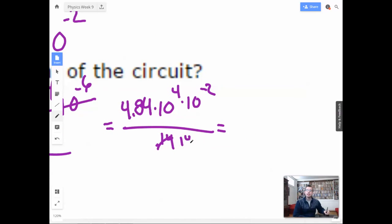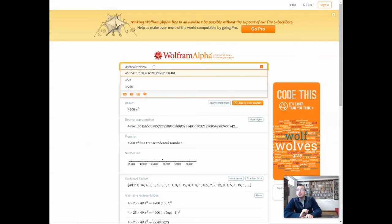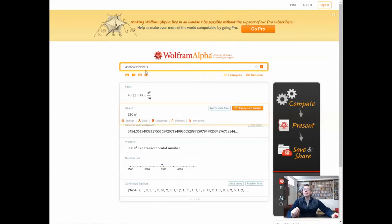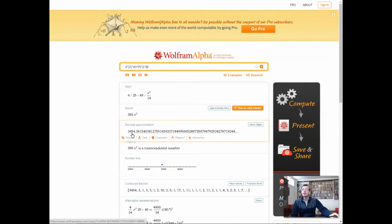Simplifying, this becomes 10 to the negative 2nd. And then we have 4 times 25 times 49 times pi squared. And then we have, 4.84 equals 4.84 times 10 to the 1, 2, 3, 4, times 10 to the 4th, times 10 to the negative 2nd, over 0.14.